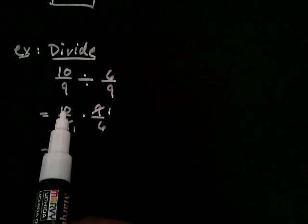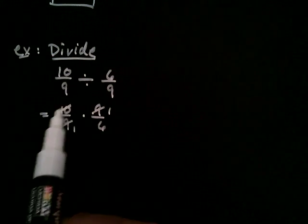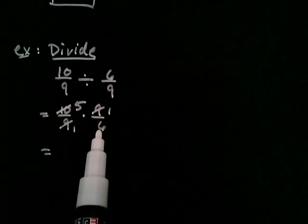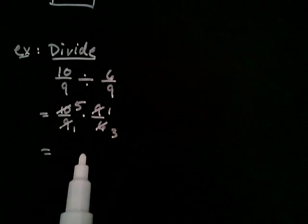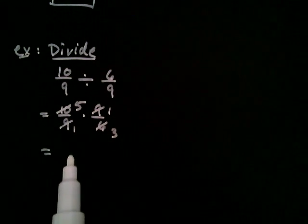people say, oh, a two goes into the ten and leaves me with a five, and a two also goes into the six and leaves me with a three. And it's fine to do it that way if you can see it like I did in this example.